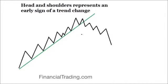A head and shoulders represents an early sign of a trend change. What it does not guarantee is that you'll go from an uptrend into a downtrend — what it does guarantee is that at the very least you'll get some sideways consolidation. But more often than not, because people recognize the head and shoulders, the support level is quite important. Once that goes, you are then pretty much in a bear market.